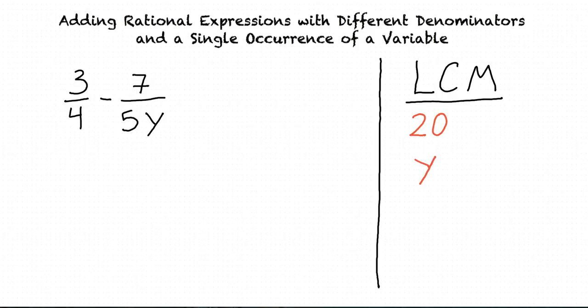Now we've found that the least common multiple of our constants is 20, and the least common multiple of our variables is y. So the least common multiple of the denominators is 20 times y, or 20y. So now do we have to rewrite these fractions using the least common multiple, 20y, as a common denominator?